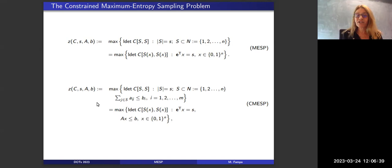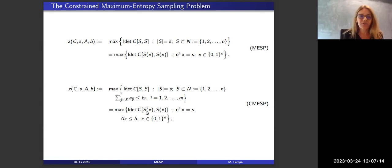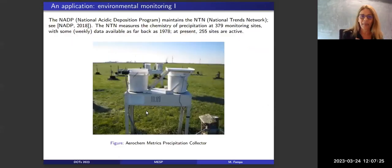CMESP is an interesting nonlinear integer program not only because of its applications but also because it is what we call a non-factorable nonlinear integer program, meaning the objective function cannot be decomposed into nonlinear functions typically found in global optimization solver libraries. This makes it a genuinely challenging problem for researchers and software developers in global and mixed integer nonlinear optimization.